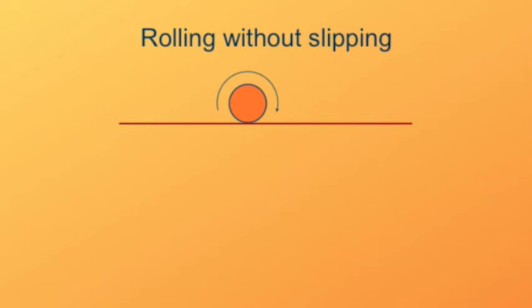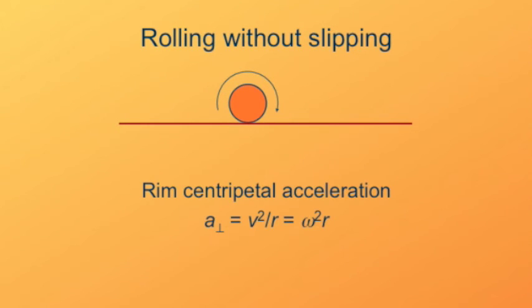The centripetal acceleration of a point on the rim of an object with radius r is just v squared over r, which is the same thing as omega squared times r.